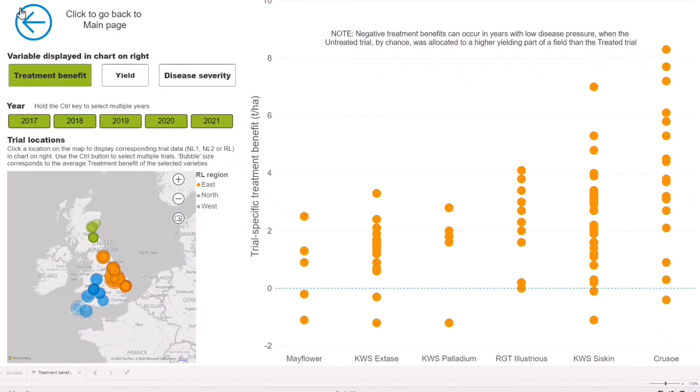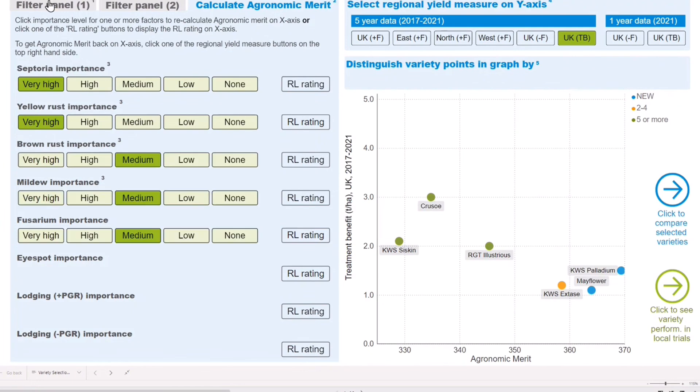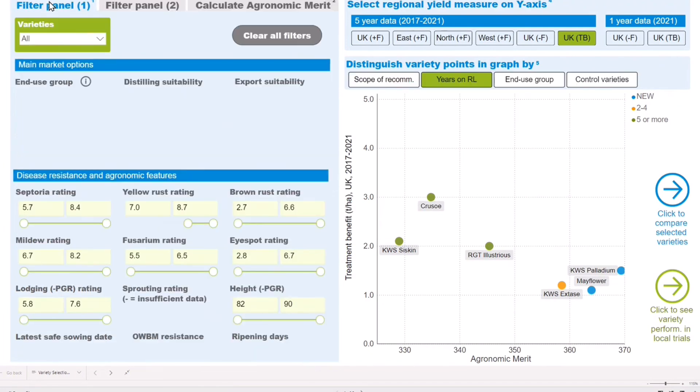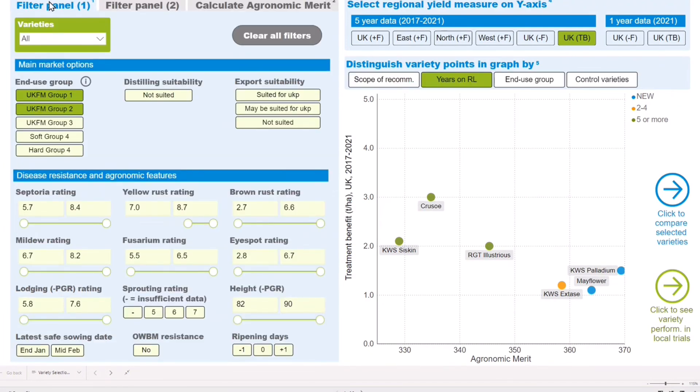To return to the first main page, click on the left-pointing blue arrow. Each of the variety selection tools is subtly different. Take time to explore what they do and remember to simply select clear all filters to start again.